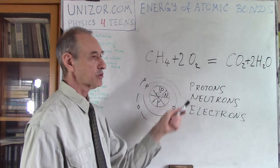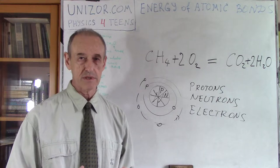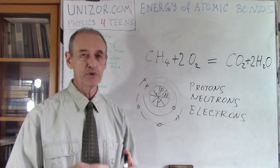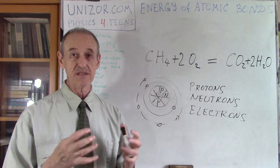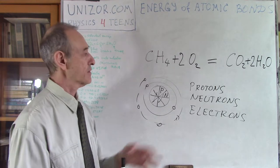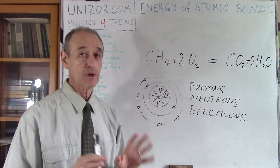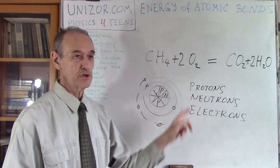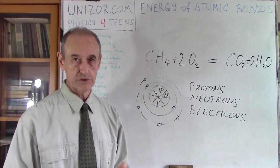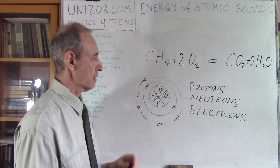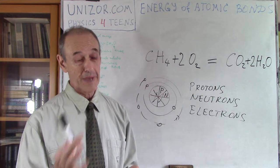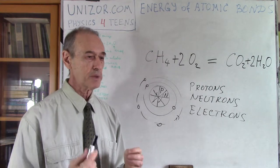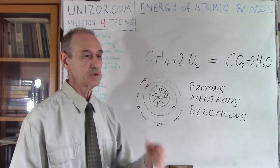Protons and neutrons are much heavier — significantly much heavier — and they contribute the lion's portion of the mass of the atom. They are more or less of the same mass, and we call this mass of the proton or neutron the atomic mass unit. The atomic mass unit of a proton or neutron is considered to be one.